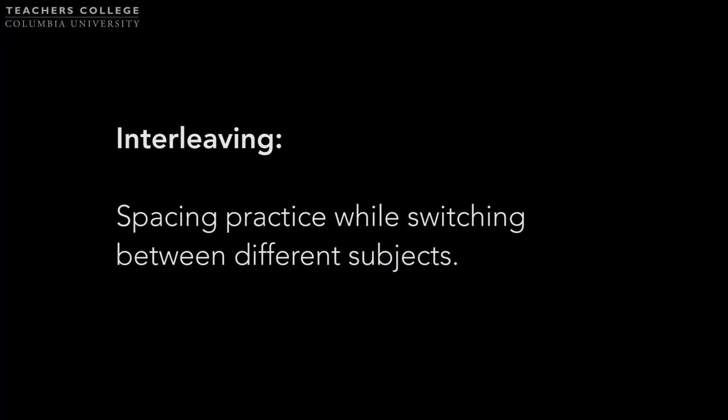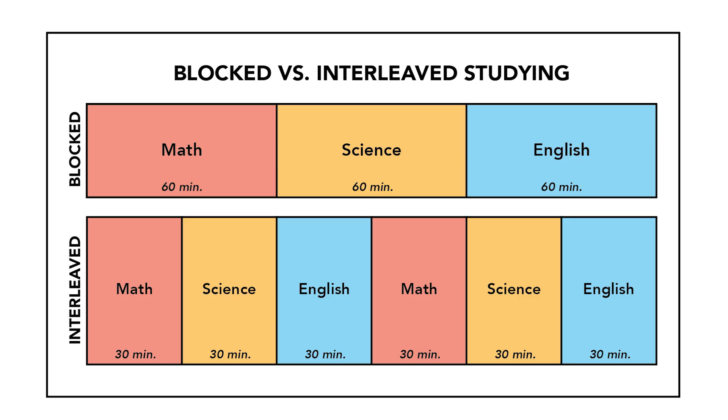Our third highly effective learning strategy for students is a variation of spaced practice called interleaving. This involves not only distributing practice over time, but also changing the order of materials studied across different topics. An hour of homework in three subjects becomes six 30-minute sessions alternating the different subjects. It may seem harder or less useful at first glance, but switching from one subject to another combines the memory advantages of both spaced practice and retrieval practice. Don't switch too much or have intervals that are too short — 20 to 30-minute blocks are probably the shortest to use, otherwise the negative aspects of multitasking can come into play.